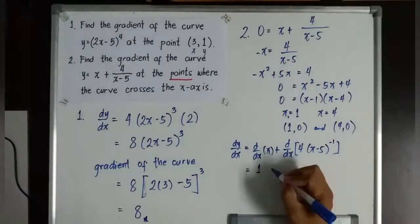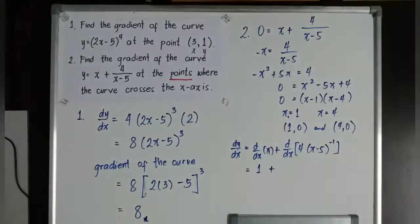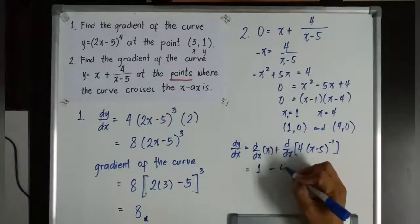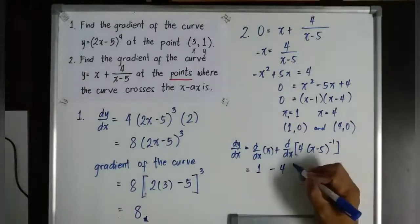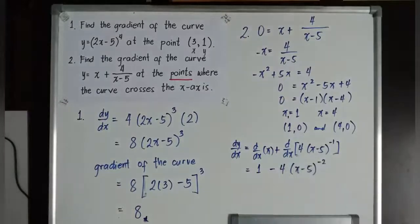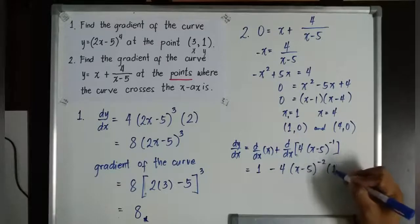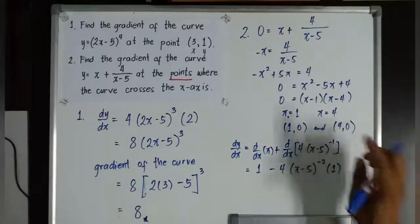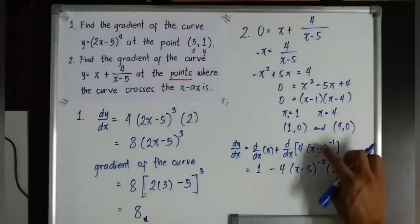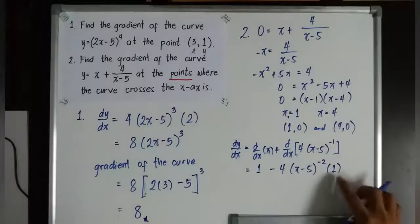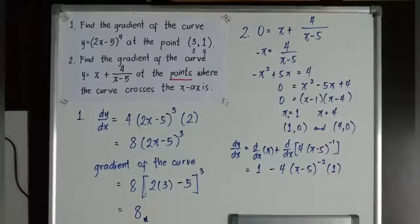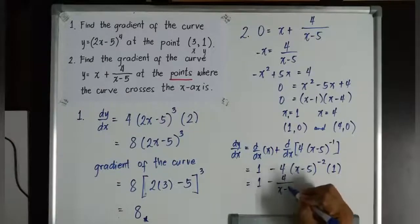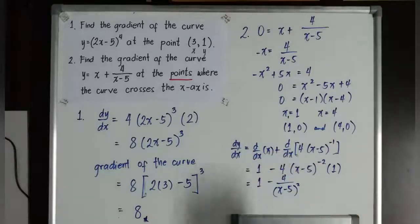Plus, what is the dy over dx of this? Basically, you apply chain rule. Negative 1 times 4 is negative 4. So this will become negative 4 instead of plus 4. Then, bracket x minus 5 to the power of negative 2. And you get the derivative of x minus 5 which is 1. How did I know it's 1? Because this is 1, 1 times x power of 0 is 1. The derivative of negative 5 is 0. That's why it's only 1. Next. This will now be simplified as 1 minus 4 over x minus 5 to the power of 2. So that is the value of the dy over dx.